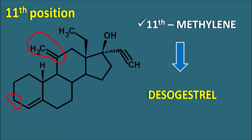In summary, we have the different types of structural modifications to progestogens, applicable to either the androstane nucleus or the pregnane nucleus. Within the androstane nucleus, the important modifications are: incorporation of a 17-alpha-ethinyl group, removal of the methyl group at the 19th position, introduction of an ethyl group at the 13th position, and substitution of a methylene group at the 11th position. Within the pregnane nucleus: 17-alpha hydroxy esterification gives prolonged duration of action, removal of the 19th methyl group increases activity, 6-alpha-methyl substitution increases potency by inhibiting inactivation, and introduction of an extra double bond at the 6th position also increases activity.